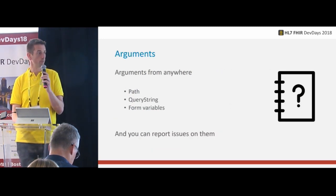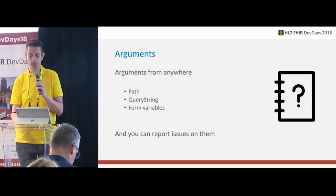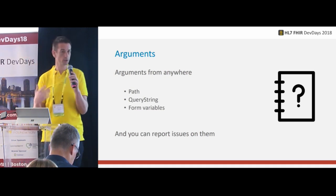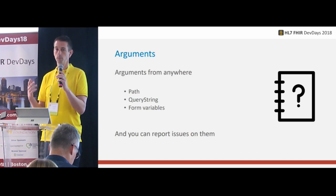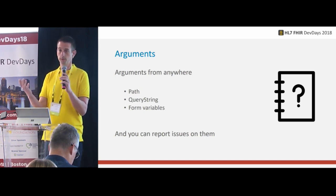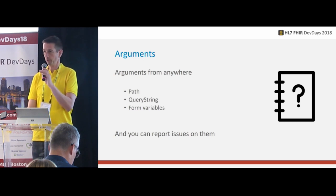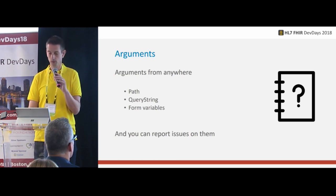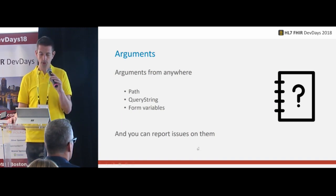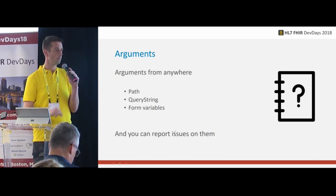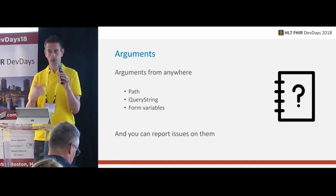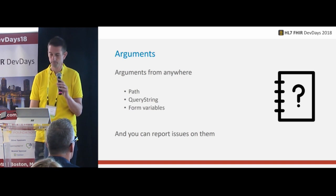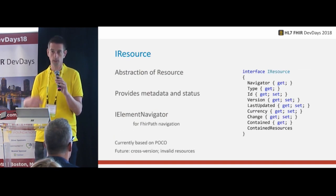Arguments can come from anywhere: from the query string (everything after the question mark), from the path — querying /patient/ID gives you _type and _ID as search parameters — and from form variables, for example with a search using a POST method, which is also allowed. If one of the arguments is wrong, you can report an issue on the argument, and that will be translated to an operation outcome automatically, telling the user which argument was wrong and why.